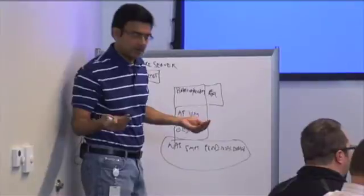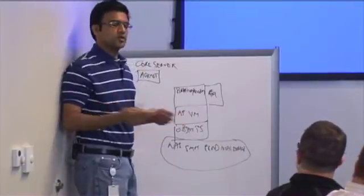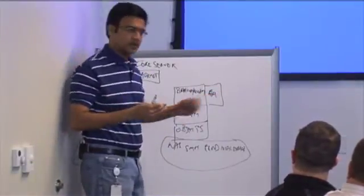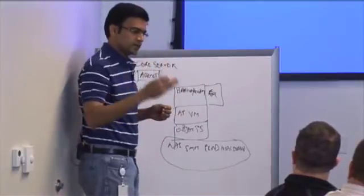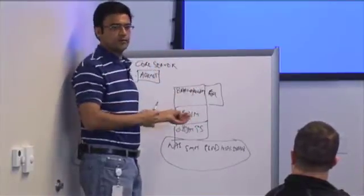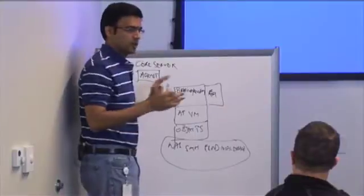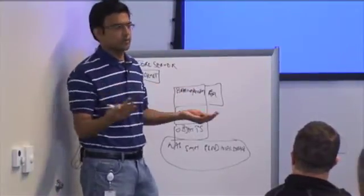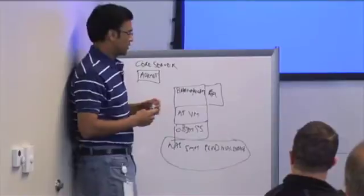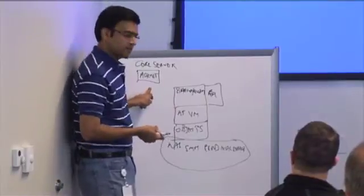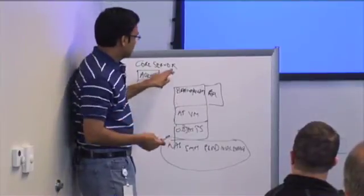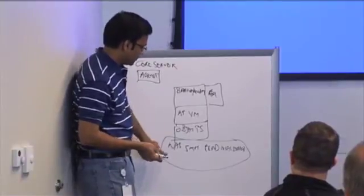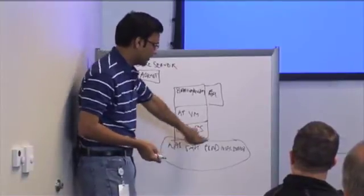They call these recovery points, and the recovery points are a point-in-time copy. They're incremental forevers. Based on how you've configured your snapshots — I use snapshots and incrementals interchangeably because they're essentially the same in this case. All the agent does is send changed blocks to the core server, and the storage it's writing to could be NAS, SAN, or cloud storage.